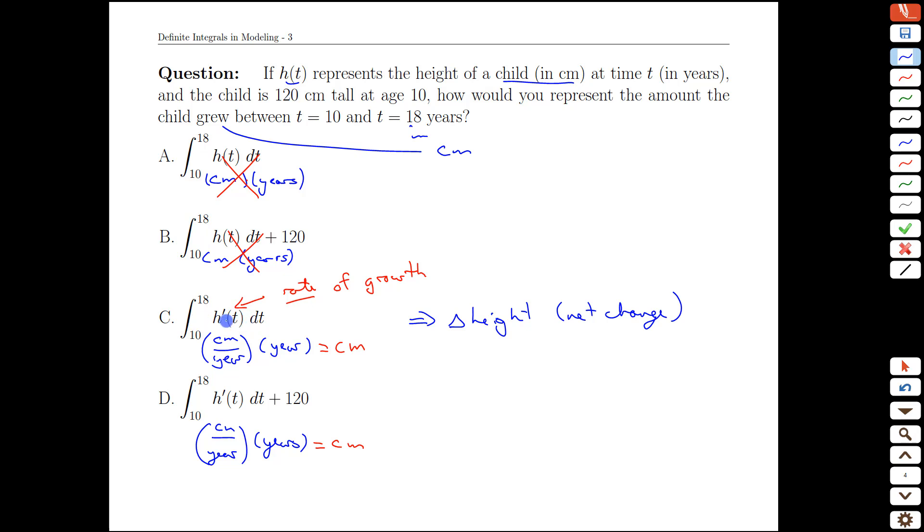If all we're told is how quickly they're growing, then when we add how quickly they're growing times the units of time, we find out the change in their height. And this is what we were actually asked for in this scenario. How much did the child grow by between 10 and 18 years? This integral here.